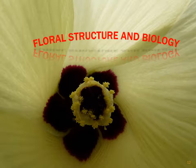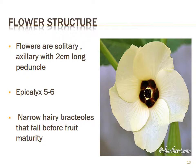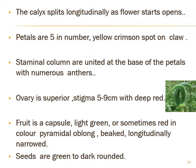Floral structure and biology: flowers are solitary and axillary with 2 mm long pedicles. The epicalyx has 5 to 6 narrow hairy bracteoles that fall before fruit maturity. The calyx splits longitudinally as the flower starts opening. Petals are 5 with yellow crimson spots on the claw — the claw being the outer finger-shaped portion. Staminal columns are united at the base of the petals with numerous anthers. The ovary is superior, and stigma is 5 to 9 cm with a deep red color. The fruit is a capsule, light green or sometimes red in color, pyramidal-oblong, beaked, and longitudinally narrow. Sepals are green to dark and rounded.